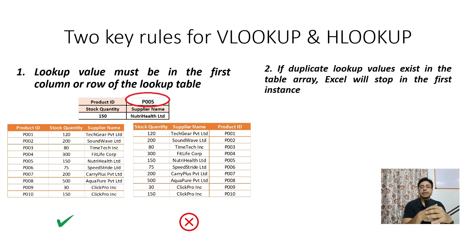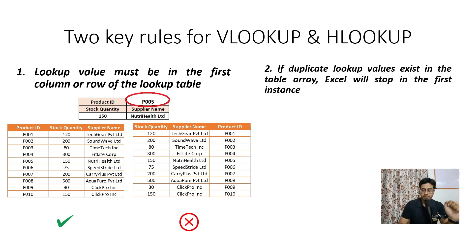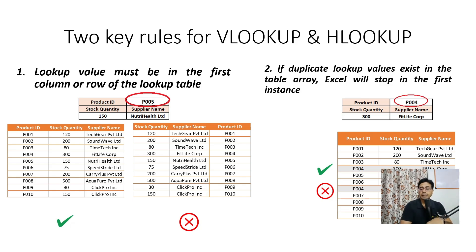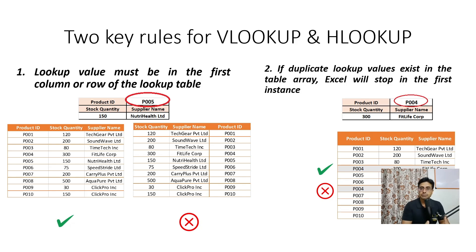If the lookup value had been in the third column or anywhere to the right of what you're looking for, it would not have worked — though we can overcome this using two separate functions, which we'll cover in a different video. Rule two: if duplicate lookup values exist in the table array, Excel will stop at the first instance. For example, if product ID P004 appears in two different places, Excel returns the result from the first occurrence and does not look beyond that. These are the two key rules to remember for VLOOKUP and HLOOKUP.